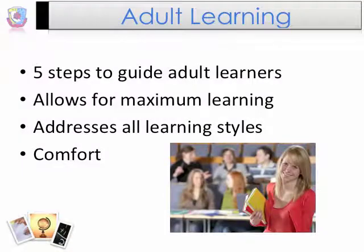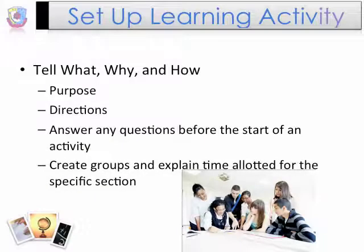There are five steps to guide adult learners. These steps provide for maximum learning from the learning outcome, address all learning styles, and give adults a sense of comfort in the learning environment. The first step is to set up the learning activity. It's important for adult learners to understand what they're required to accomplish, why the activity is important, and how the objective is going to be met. As the trainer, set the ground rules, make sure directions are clear to avoid confusion, answer any questions, and create groups for adults to work collaboratively.